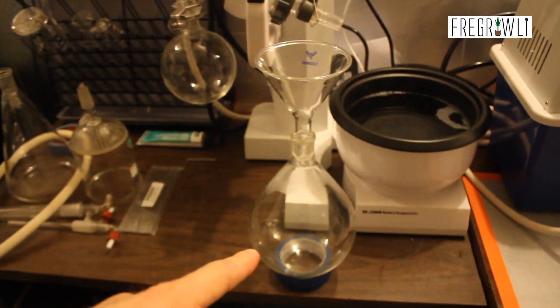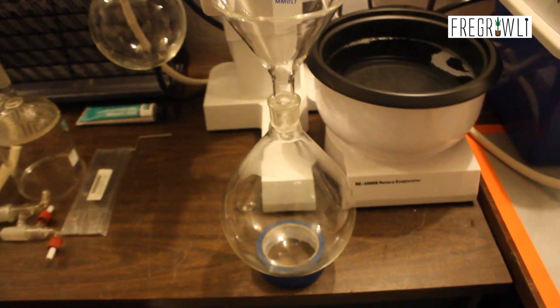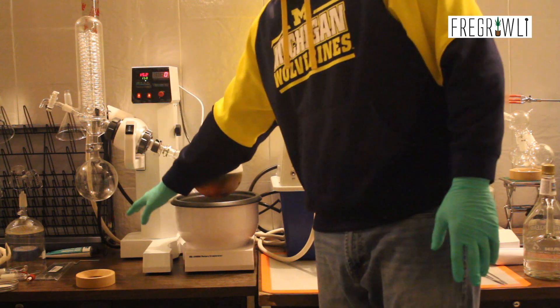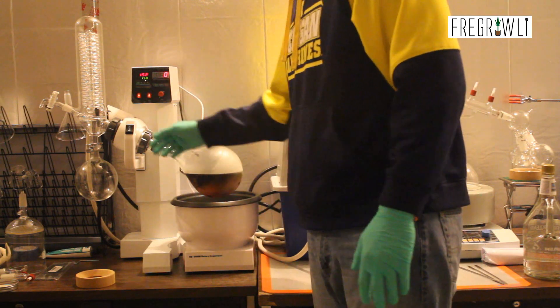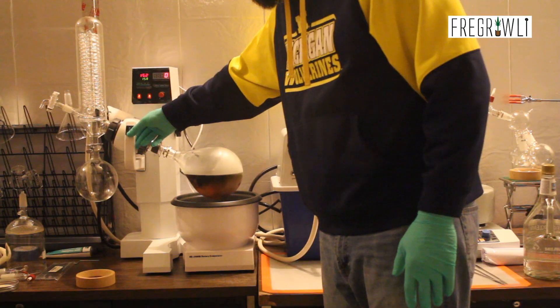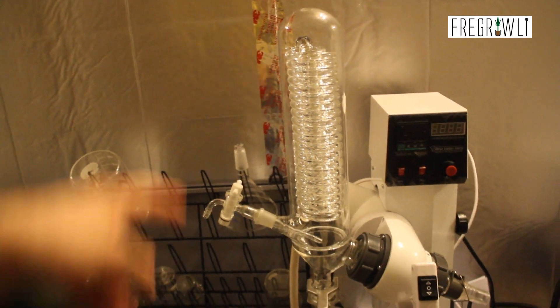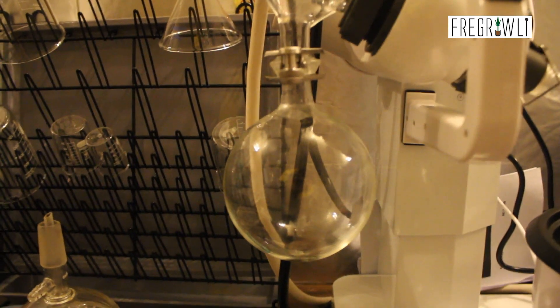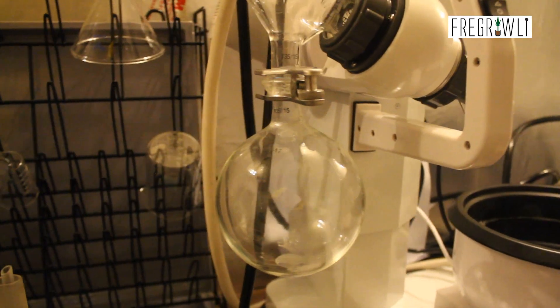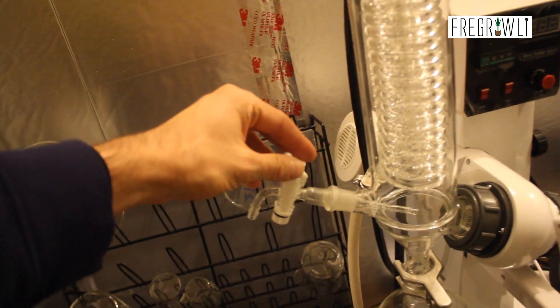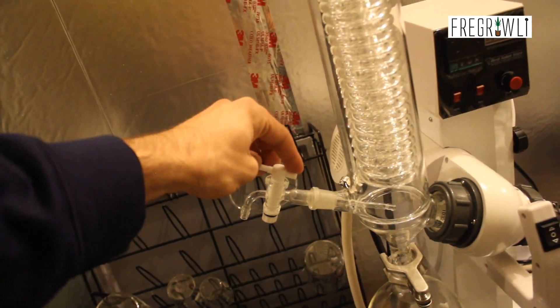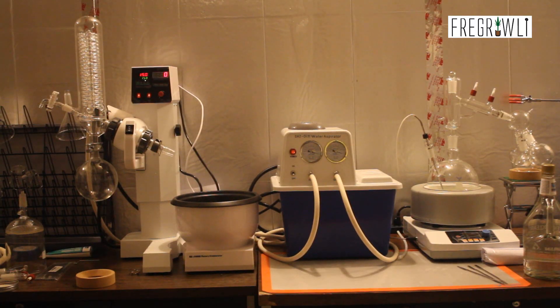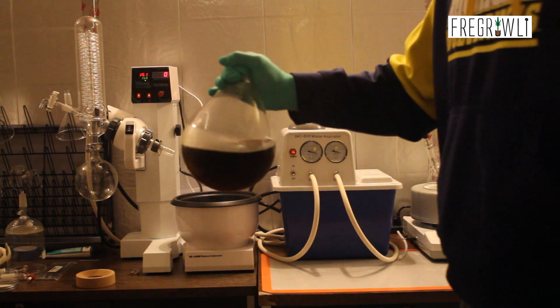The lift jack raises and lowers your evaporation flask in and out of the hot water bath. The hot water bath keeps your flask and extract at the desired temperature. The condenser recondenses your evaporated solvent into a liquid. The receiving flask collects all of the recondensed solvent for you to reuse. The vacuum valve allows you to manually adjust the vacuum level in the system, although you could purchase a vacuum regulator to do this automatically. And the evaporation flask will contain your finished and unfinished extract.